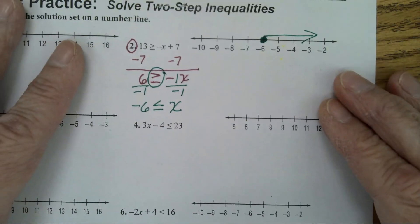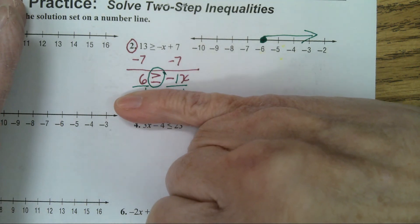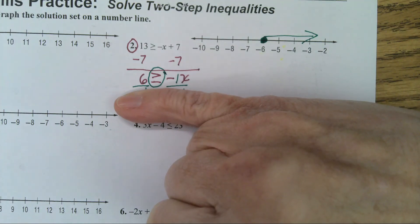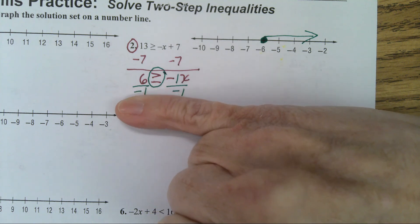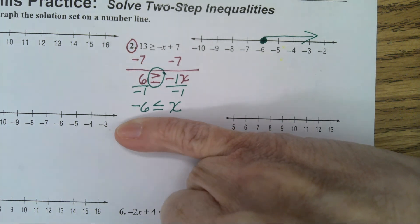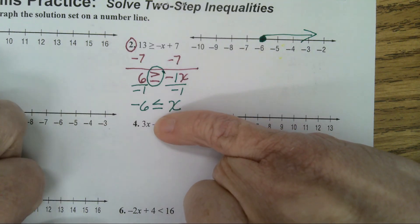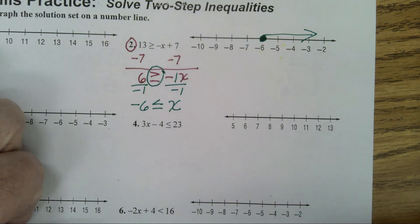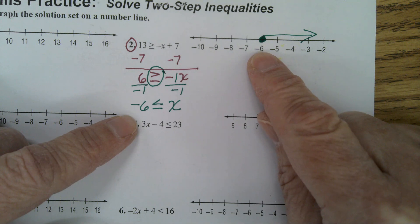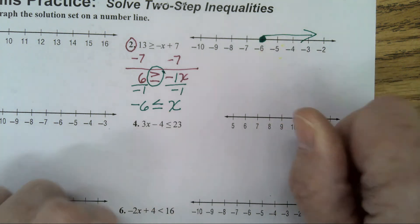Now let's go to problem number 2 on the back side. In number 2, the first thing you do is get rid of your plus 7, so you subtract 7. And you have 6 is less than or equal to negative x. This is the tricky part — negative x is the same thing as negative 1x. So just divide both sides by negative 1, and now you have a positive x. 6 divided by negative 1 is negative 6. Since you divided both sides by a negative 1, your inequality sign flipped. Your final answer is negative 6 is less than or equal to x, with a closed circle on the negative 6. X has the big N — big numbers are to the right.